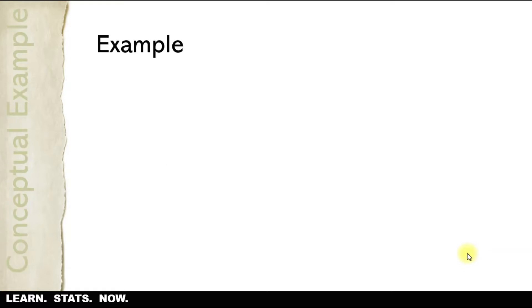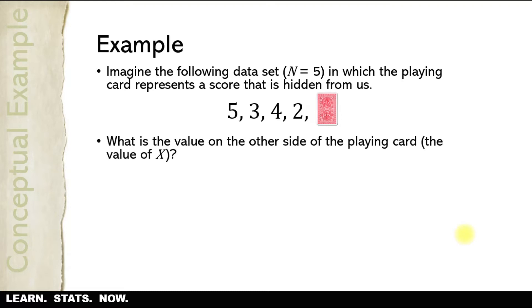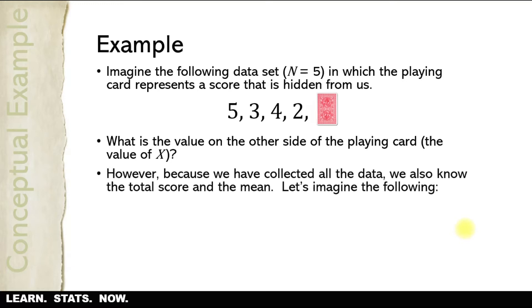Let me give you an example. Imagine a data set where n equals five — a very small data set — in which a playing card represents a score hidden from us, which we'll call x. I show you the data, and then there's another value on the other side of the playing card. What is the value of x? There's no way to know — it could be anything. However, because we've collected all the data, we also know the total score and therefore the mean. Let's say the sum is 20, and that includes the hidden value.